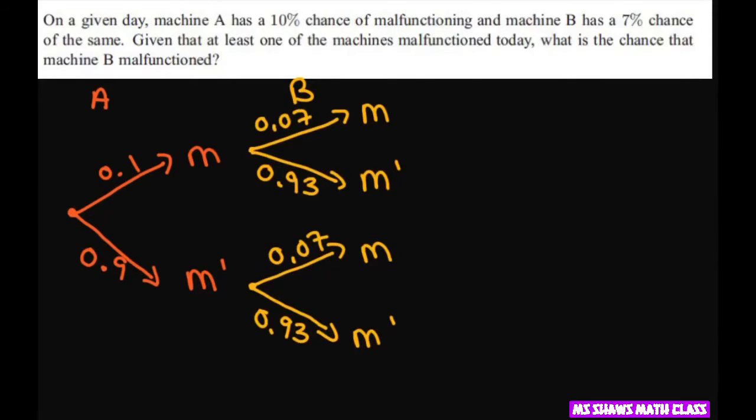Let's answer some questions. It says, given at least one of the machines malfunctions. So, what we're doing is we're using our conditional probability.